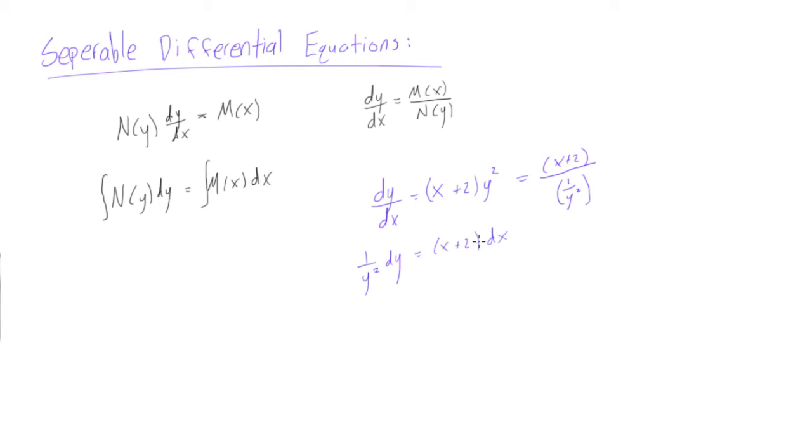So we can get back to this. Now we can take the integral of both sides and we will get, this is the integral of y to the minus 2, so we will get negative 1 over y is equal to, well this will become 1/2 x squared plus 2x.